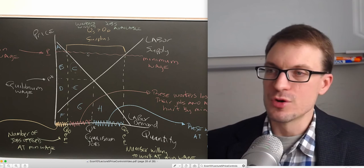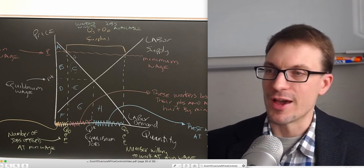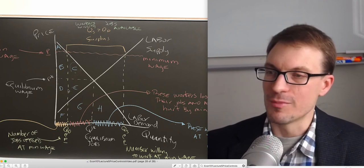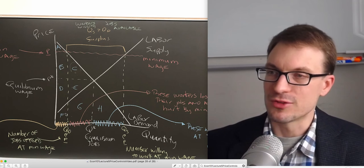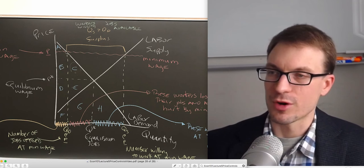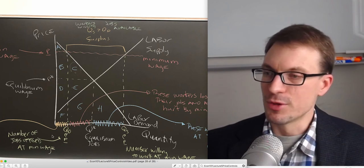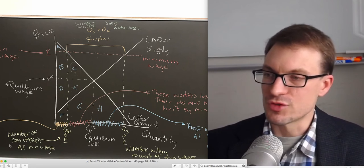With the minimum wage imposed, we find quantity demanded at P-lower-bar — this is the number of jobs available. We find where the minimum wage crosses the labor demand curve; QD is the number of jobs offered at the minimum wage.